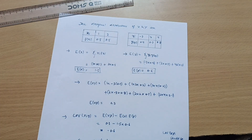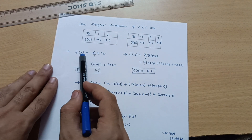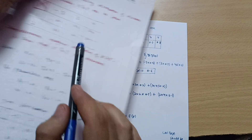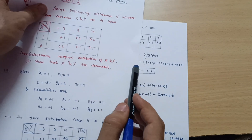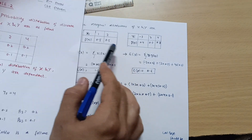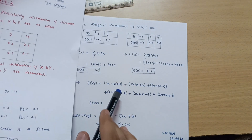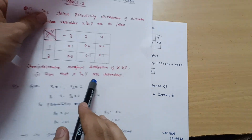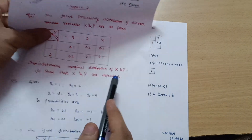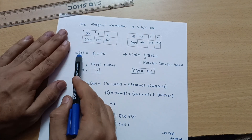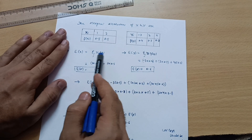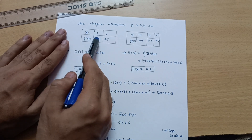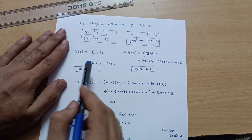To show that x and y are dependent, we need to calculate the covariance. For that we need E(X), E(Y), and E(XY). E(X) = summation of xi × f(xi), which is 1 × 0.5 + 2 × 0.5.